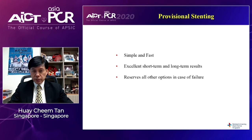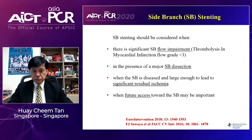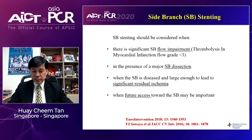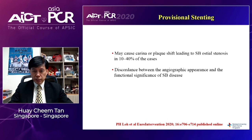Provisional stenting can be a very simple and fast procedure. It has excellent short-term and long-term results and reserves all other options in cases of failure. When do we do side branch stenting in provisional stenting? Typically this occurs when there is side branch flow impairment, major side branch dissection, significant residual ischemia, or when future access to the side branch is important. However, in provisional stenting there can often be carina shift, which occurs in 10 to 40 percent of patients.